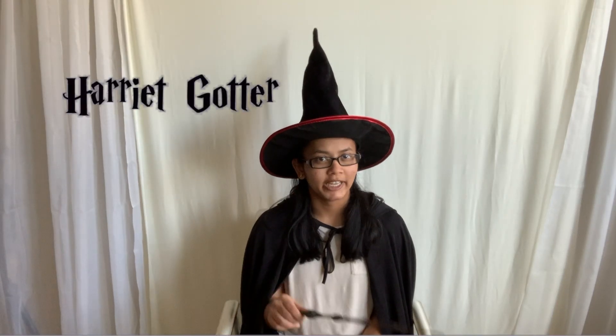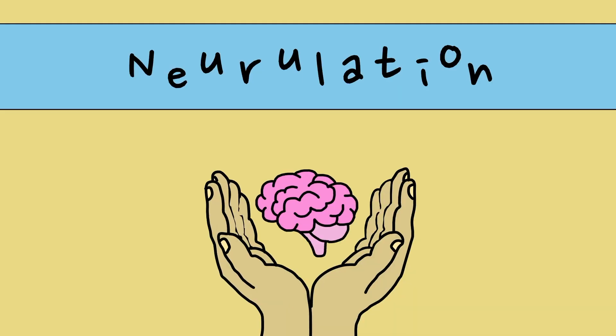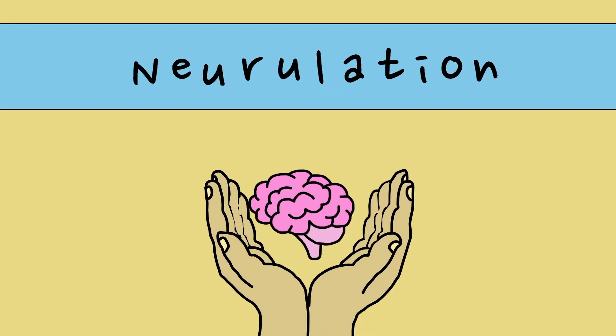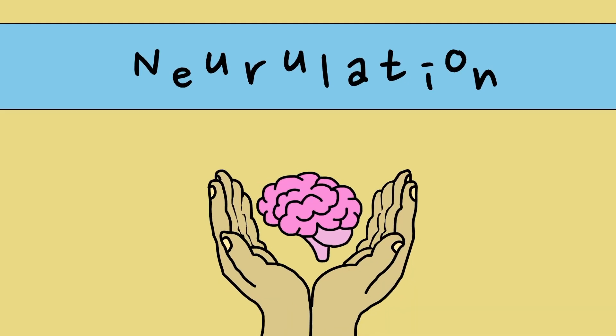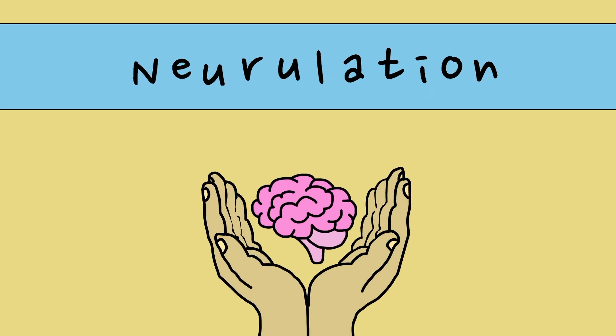What's a neural tube? That's an excellent question. It all started with a process called neurulation. Neurulation is the early process of organogenesis, which is the organ development in an embryo. Neurulation marks the start of the nervous system.